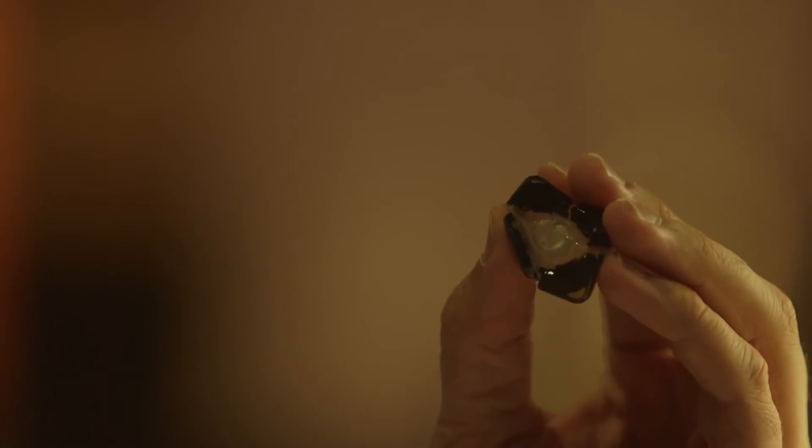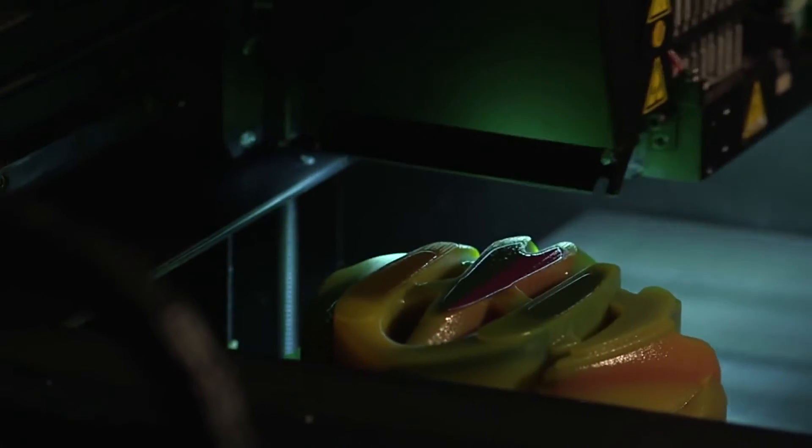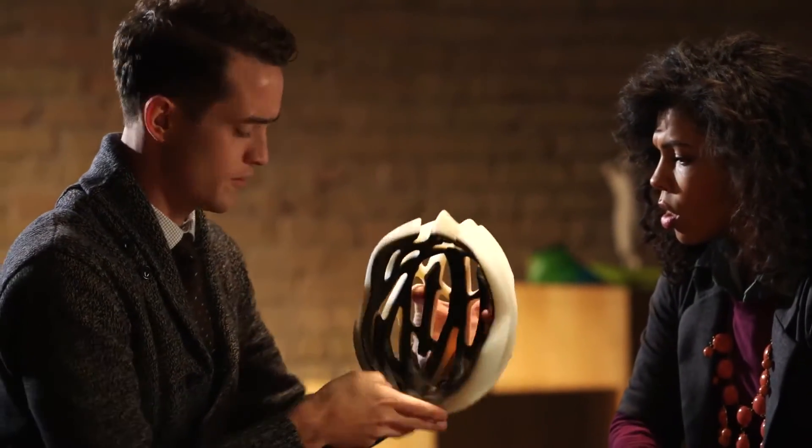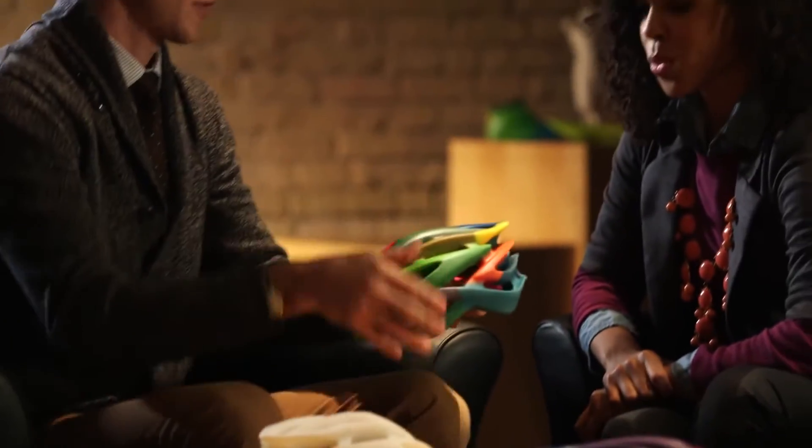Connex technology has always worked by combining two model materials inside a 3D printer to create a variety of composite materials in one print job. With Object 500 Connex 3, we've expanded the technology to let you start with three model materials. And for the first time ever with PolyJet technology, you have the ability to 3D print in color.